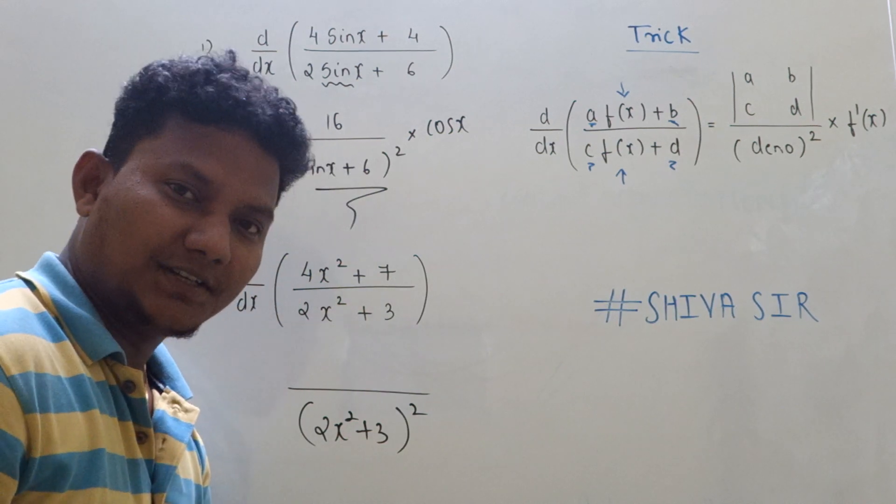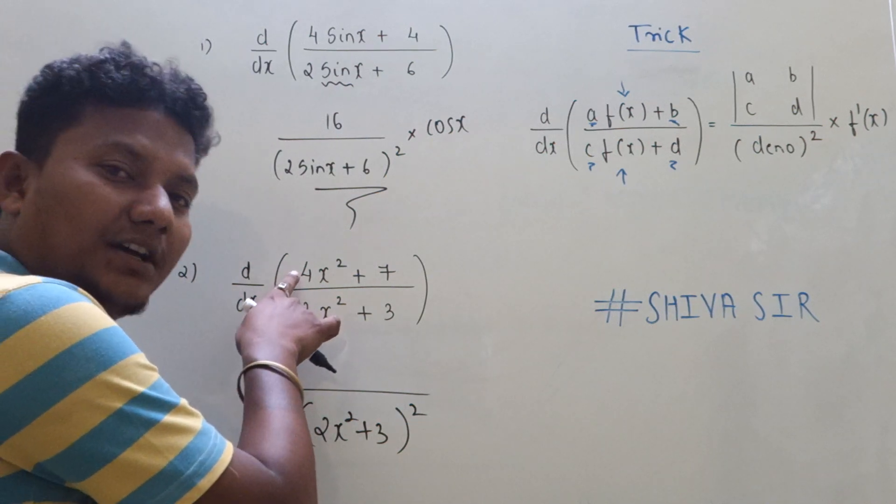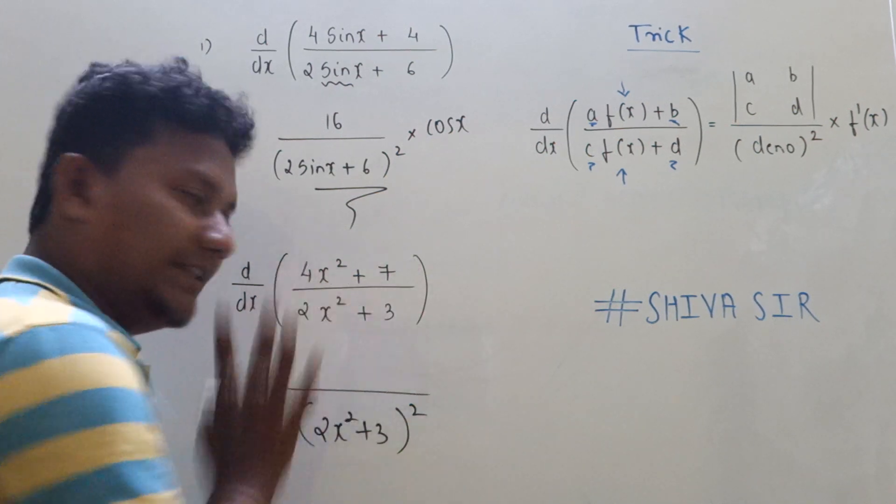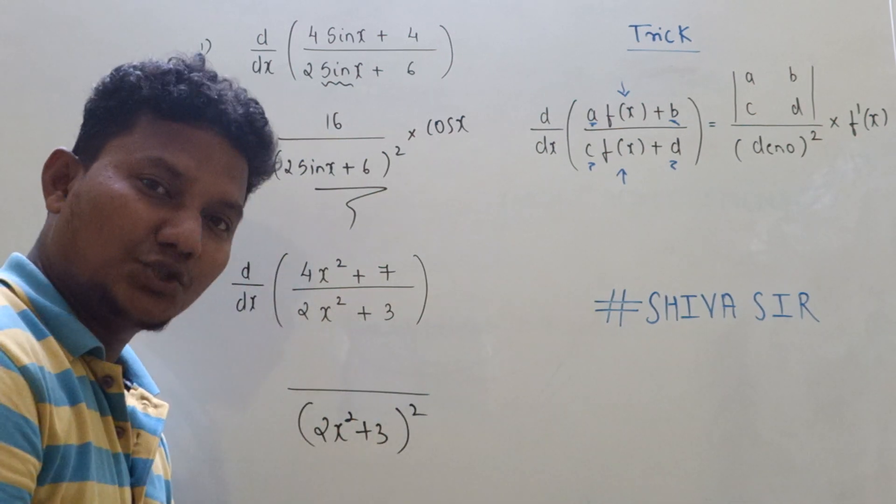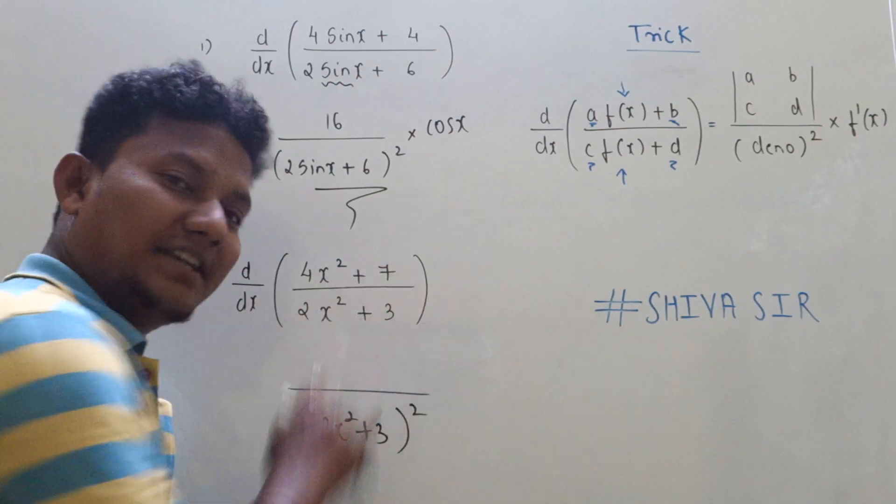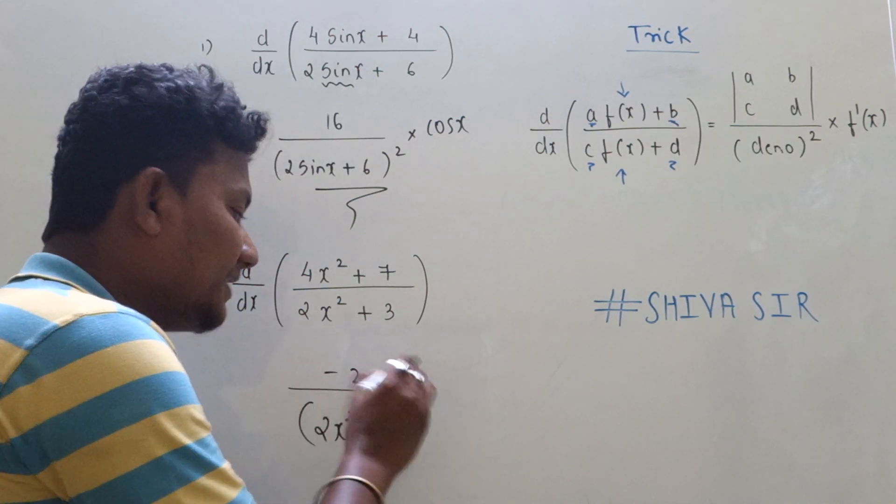Next, in the numerator you will find the determinant of that coefficient. So what is the coefficient here? It is 4, 7, 2, 3. Cross it: 3×4 is 12. So 12 minus 14, that is -2.